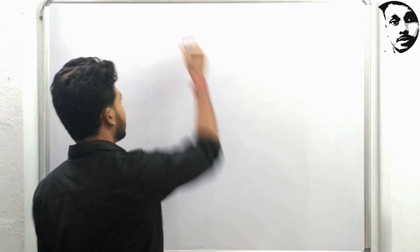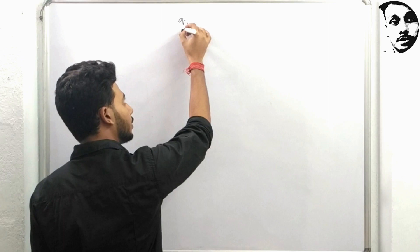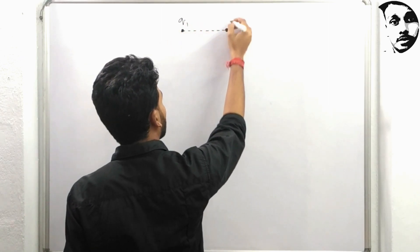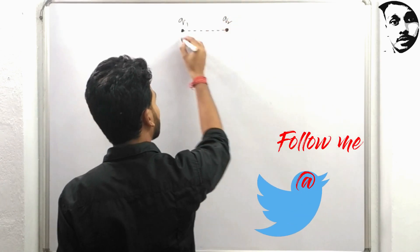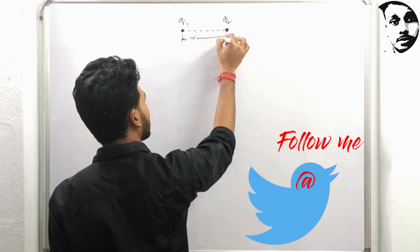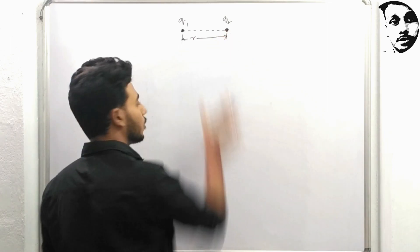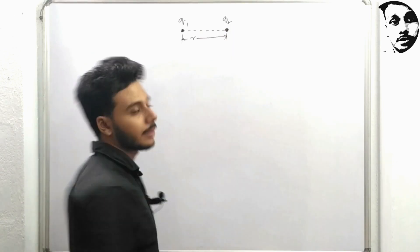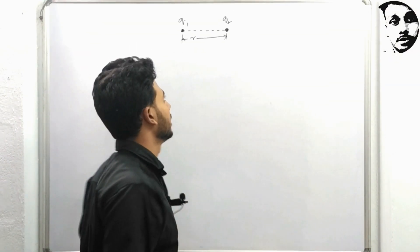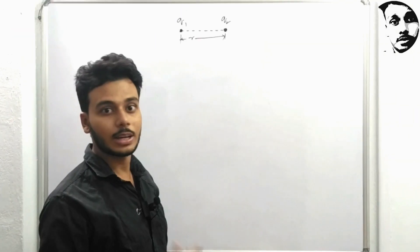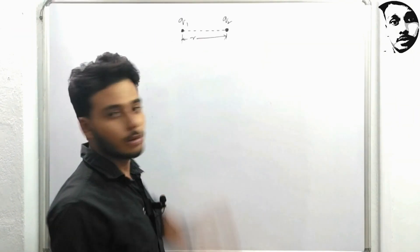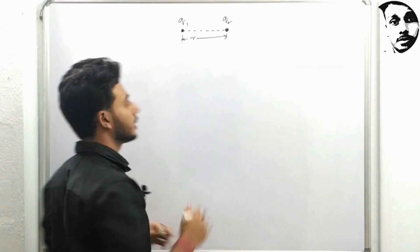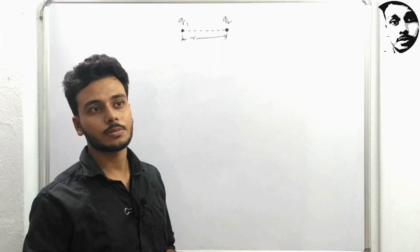Let's say this is one charge, Q1, and another charge is Q2, and they are r distance apart. So r is quite small distance. My question was: what happened then? That question is actually answered by Mr. Coulomb. It tells us that if two charges came in vicinity, they will exert force upon each other.